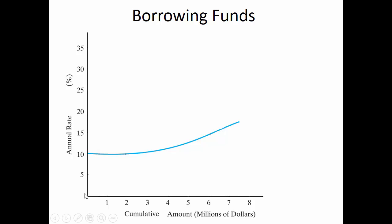As the cumulative amount borrowed increases, the annual interest rate goes up. Why would the bank require more interest as the amount a company wants to borrow increases? The risk goes up, and the overhead cost goes up as well. Tell me more about how the risk goes up — if my company is borrowing $6 million from the bank instead of just $1 million, why is that more risky to the bank?